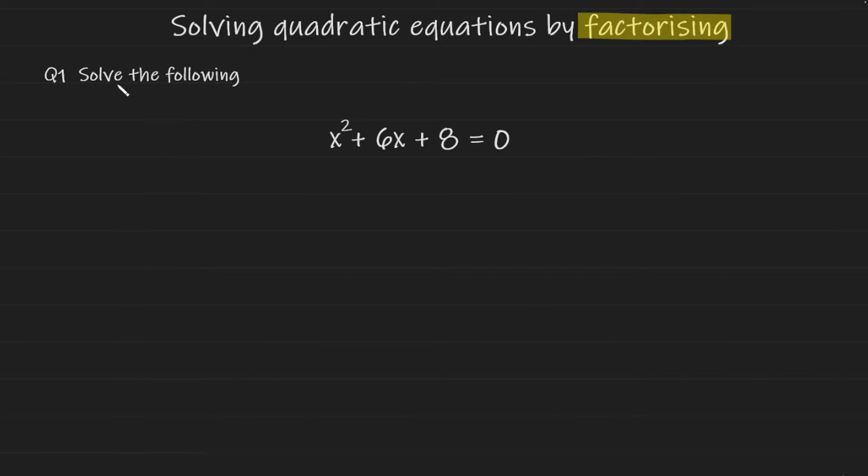Here we are being asked to solve the following: x squared plus 6x plus 8 is equal to 0. How you'd approach this is to factorize it. It is a quadratic trinomial so it factorizes into two brackets, and the first bracket is going to contain x plus 2 while the second bracket will contain x plus 4.